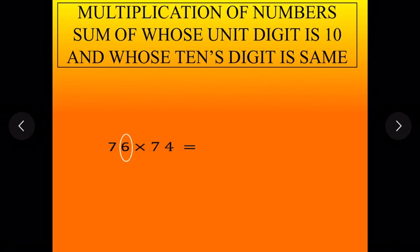6 multiply by 4 is 24. Adding 1 to 7 we will get 8. Now multiply 7 and 8 we will get 56. So 5624 is the answer.